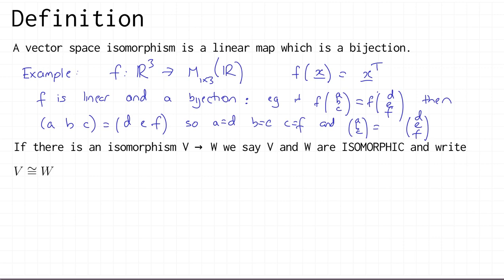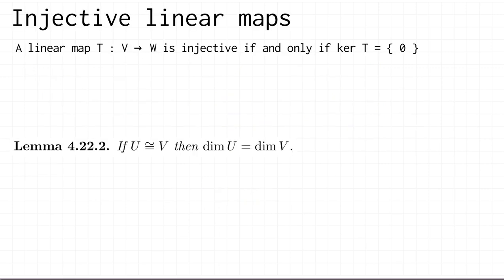When we have an isomorphism between two vector spaces — if there's an isomorphism from a vector space V to a vector space W — then we say that V and W are isomorphic, and we write V followed by this symbol, which is an equal sign with a wiggly line on top, then W. That means V and W are isomorphic. So what we've just shown is that R³ is isomorphic to M₁ₓ₃(ℝ).